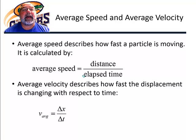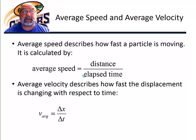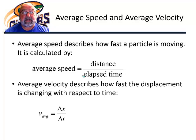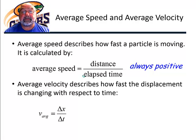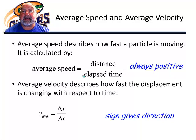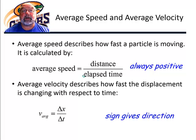Here's a recap of average speed and average velocity. Average speed is equal to distance divided by elapsed time. Average velocity describes how fast displacement is changing with respect to time. Average speed is always positive, and average velocity has a sign, and the sign tells us what direction the change in position is occurring.